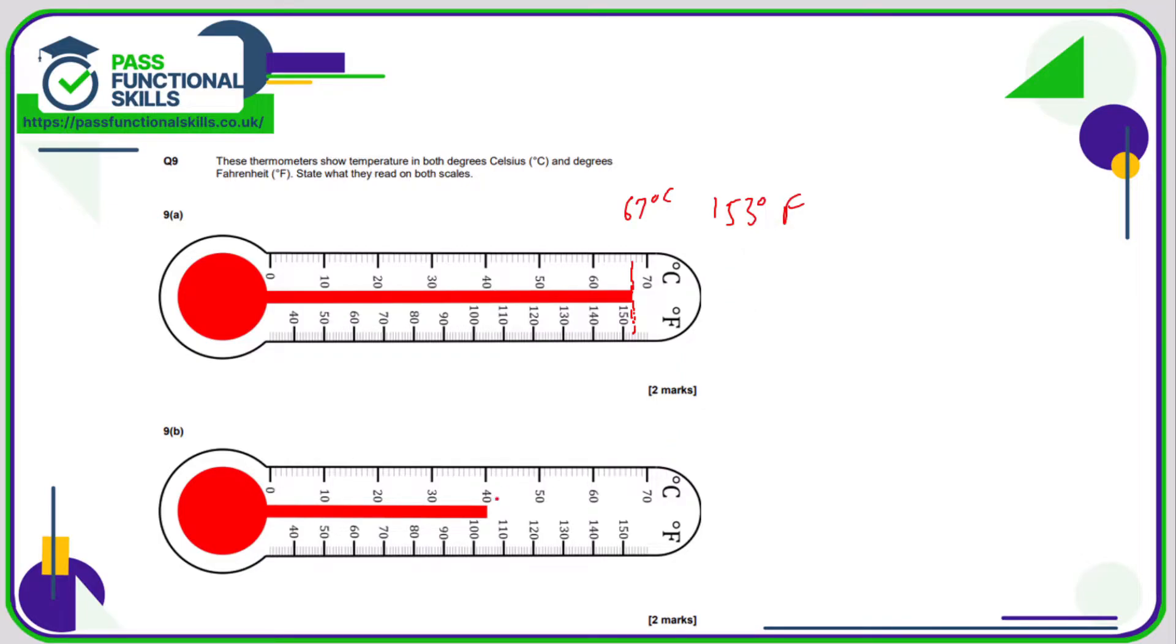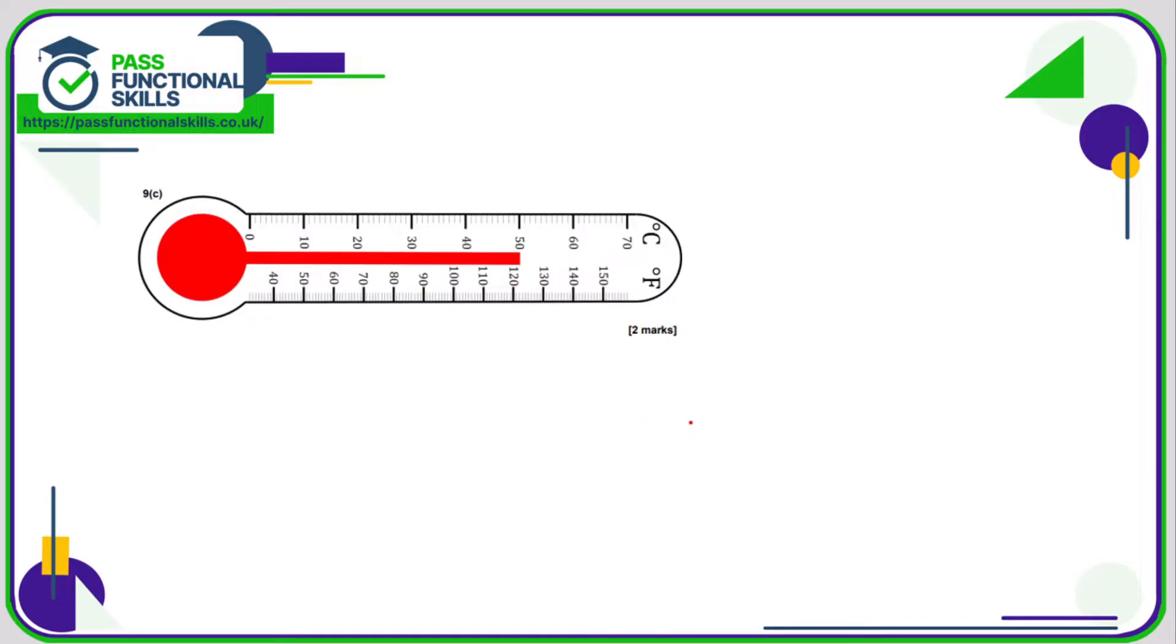For 9b, I would say that's 40 degrees Celsius and about 104, 105 degrees Fahrenheit. I'm sure both answers are acceptable. For 9c, that is 50 degrees Celsius, and I would say that was 121, 122. Let's go with 122 degrees Fahrenheit.